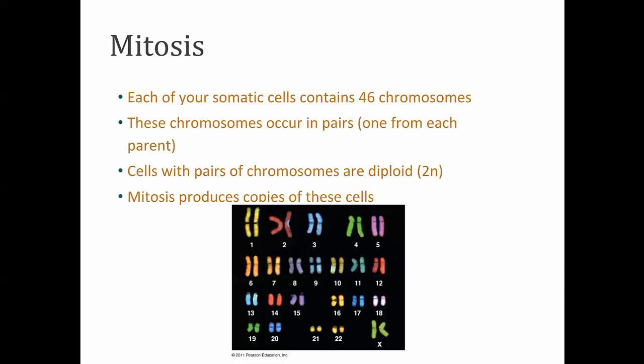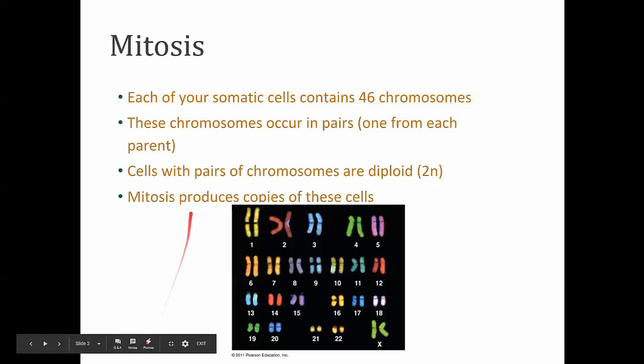Each of your somatic cells - your basic body cells - contains 46 chromosomes. These chromosomes occur in homologous pairs. Let's say we look at chromosome number one: you have two chromosomes that are chromosome number one. One you inherited from your mom, one you inherited from your dad. You already know this about sex chromosomes - you inherit an X from mom and an X from dad if you're biologically female, or an X and a Y if you're biologically male. This happens for every one of our chromosomes - we get one from mom, one from dad. Cells that have pairs of chromosomes are said to be diploid.